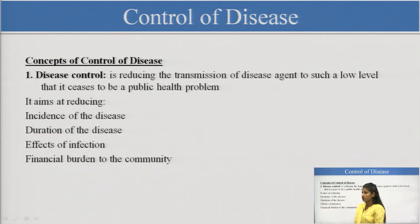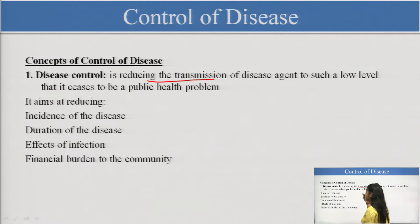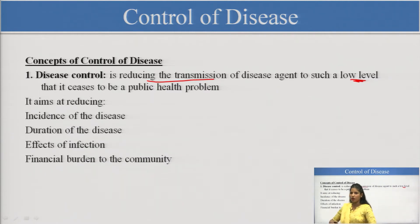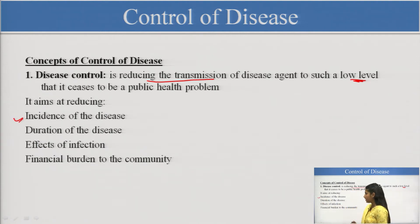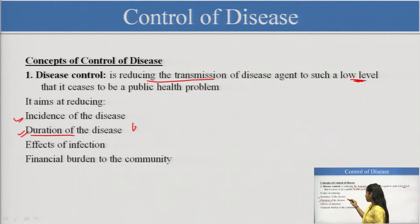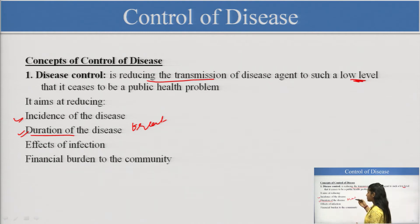Under the concepts of control of disease, disease control means reducing the transmission of a disease agent to low levels so that it cannot spread to the whole community. It aims at reducing the incidence of diseases and reducing the duration of the disease. We are implementing treatment at the early stages — we do not want it to complicate or reach the tertiary level. That is why it is taken under the primary or secondary levels of prevention.